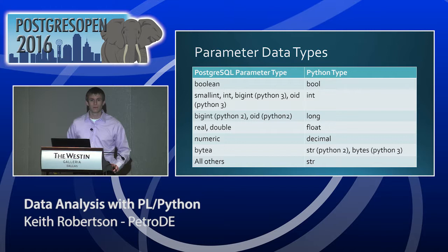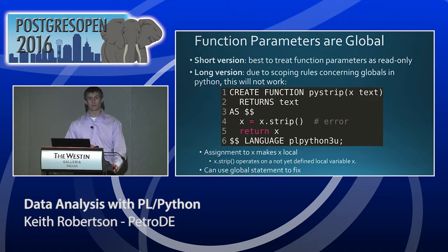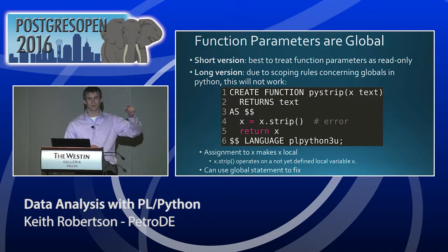To clarify on variable scope: those variables are global within that function call, but the scope gets reset every time you call a new PLPython function. If you call another function within the same session with a different name, and it also has an x text parameter, that would be totally different.